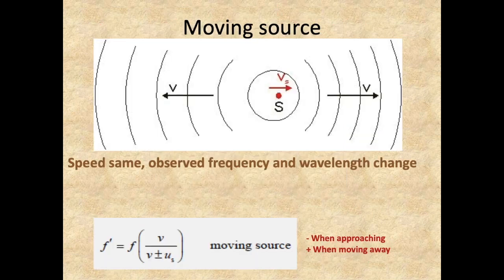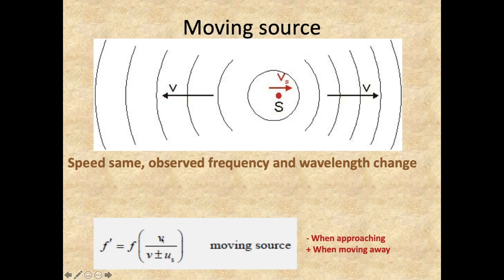Now the calculation depends on which one is moving. First we'll handle the moving source case. The formula given in the data booklet is labeled for moving source. F' is the observed frequency, F is the original emitted frequency by the source, V is the speed of the wave, and U is the speed of the source. You need to be smart about this mathematically — the data booklet only gives you the plus and minus, so you need to know when to use each version.